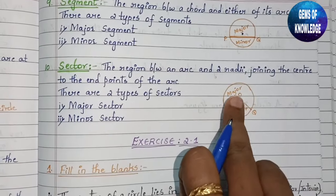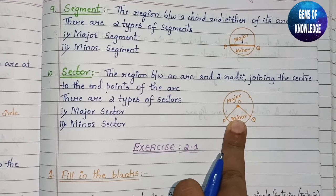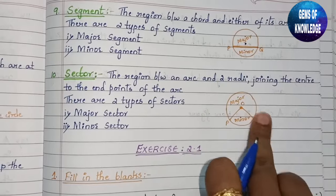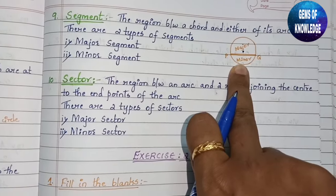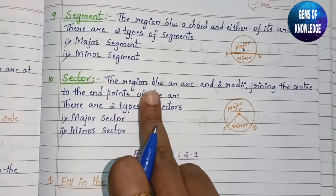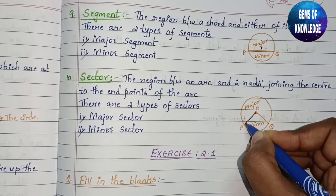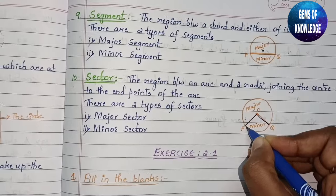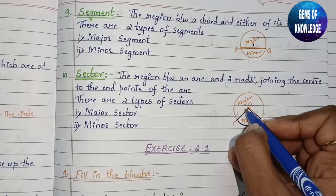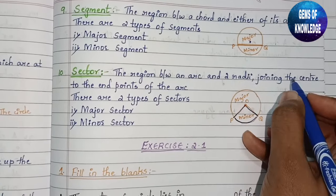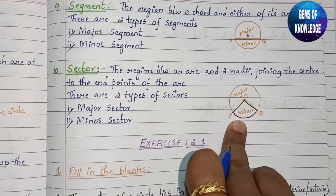The smallest part is the minor segment and the larger part is the major segment. Next is sector — notice the difference between sector and segment. The sector looks like one piece of a pizza. The region between an arc and two radii is called the sector. This is one radius, this is another radius, and this is the arc.